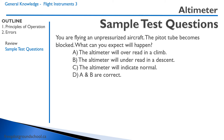Next question: You are flying an unpressurized aircraft. The pitot tube becomes blocked. What can you expect will happen? A. The altimeter will over-read in a climb. B. The altimeter will under-read in a descent. C. The altimeter will indicate normal. D. A and B are correct. Remember, where does the information come from in an altimeter? It is the static port. The pitot tube only supplies air to the airspeed indicator. This means C is correct — the altimeter will indicate normal.